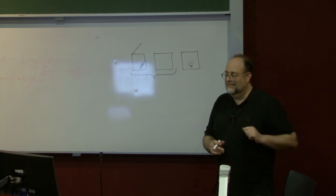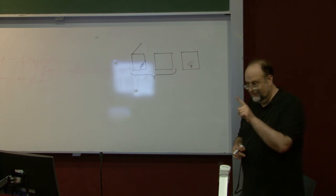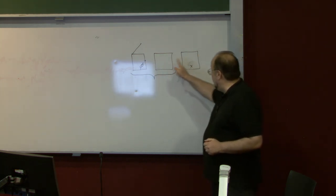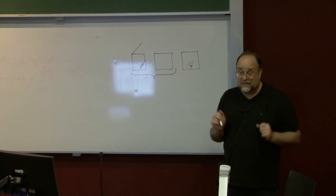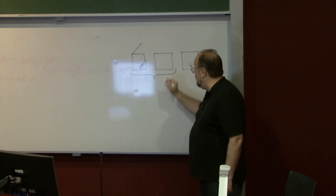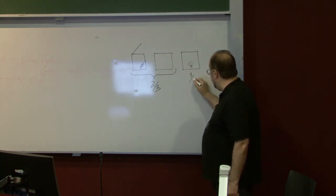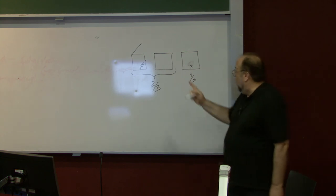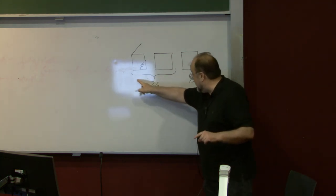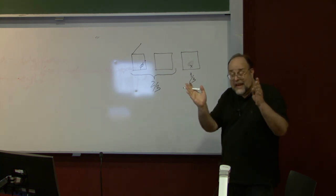For example, if the money is here, say you pick this box and then the host opens this box and it is empty. The question is, should you stay with X or should you switch to this one? Why, what's the reason to switch? There's a 66% probability that what you chose is the wrong choice. Exactly, and the host reveals the other wrong choice. So by switching, you're guaranteed to get the prize. Beautiful.